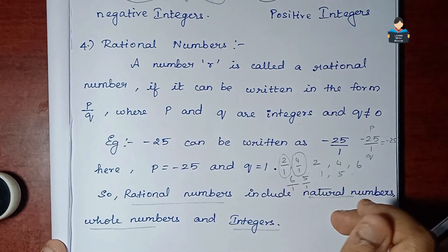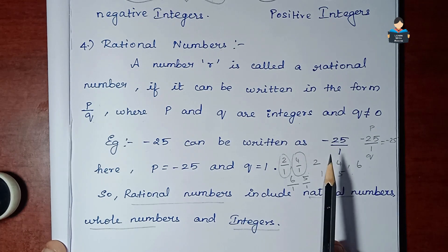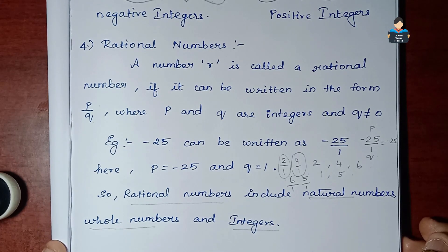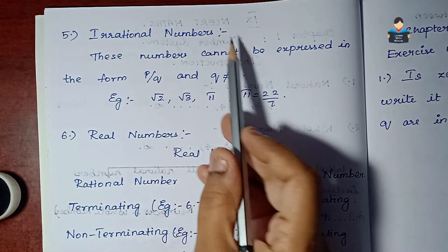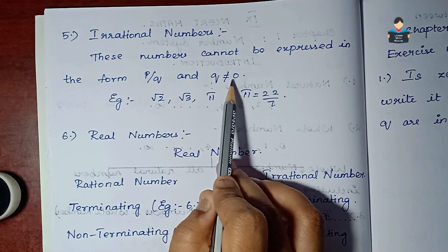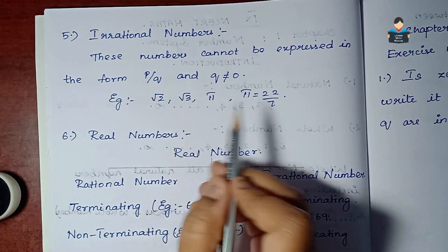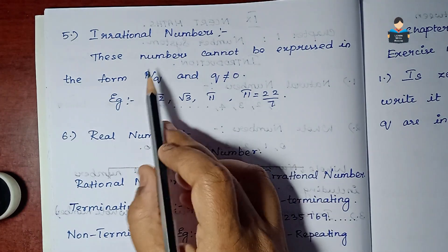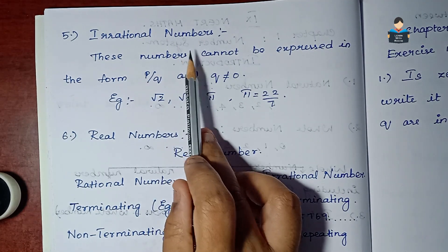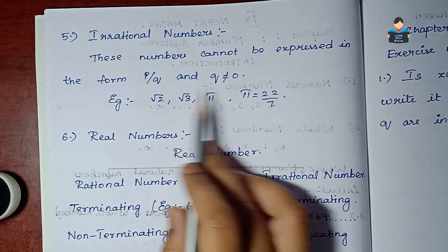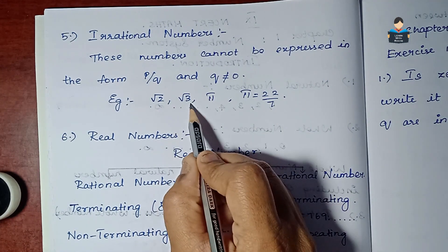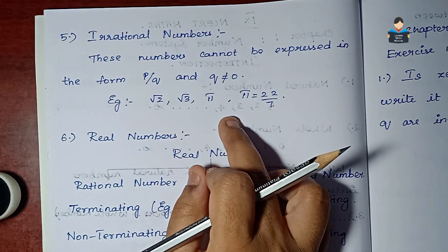Irrational numbers are numbers that cannot be expressed in the form p by q where q is not equal to zero. Examples of irrational numbers are root 2, root 3, and pi.